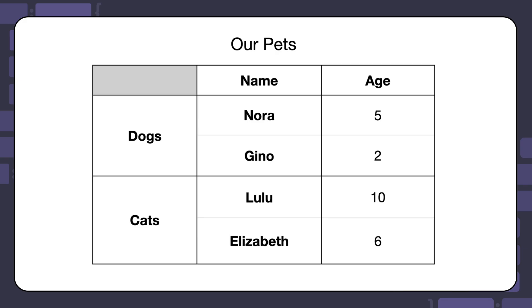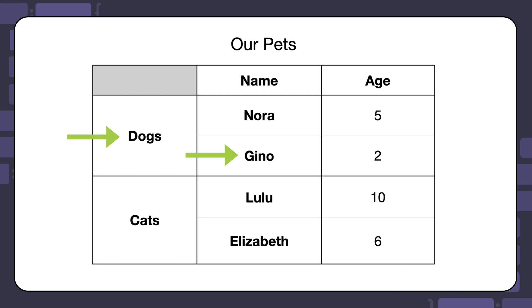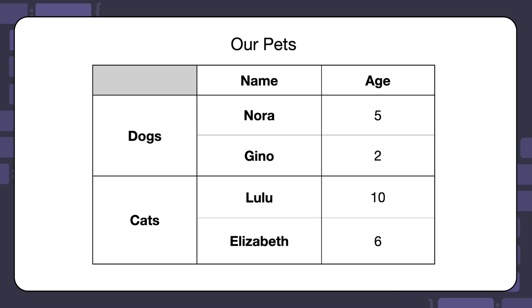If a column or row header spans across multiple cells, the scope will also be applied to each one of the cells individually. For example, in this table, the cell with Nora's age, 5, will have one column header — age — and two row headers — dogs and Nora. Geno's age, 2, will also have one column header — age — and two row headers — dogs and Geno. However, some screen readers may not be able to interpret tables with these complex structures, so you should try to flatten the table as much as possible to avoid row and column headers that span across multiple cells. Your goal should always be to make sure that users can access this information, even if their screen readers can't handle complex table structures.